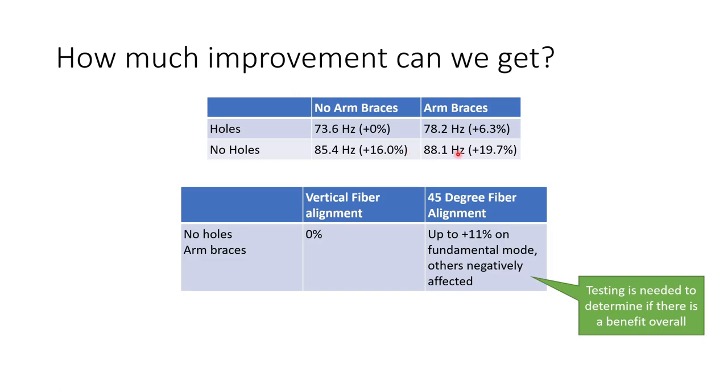And if we do both if we remove the holes and add the arm braces we can get a nearly 20 percent improvement in stiffness which should really make a huge difference when trying to tune the drone. But what if we look at the carbon fiber alignment? So this is looking at no holes with arm braces. So that's the best possible configuration. If we stick with the vertical carbon fiber alignment that gives us no improvement. But if we switch to a 45 degree fiber alignment we could be looking at up to 11 percent improvement in the torsional stiffness on that fundamental mode at the cost of negatively affecting the other modes. And so we will need to do testing here to determine if there is an overall benefit to changing the carbon fiber orientation. But it does look promising. It looks like we might be able to get even another 11 percent which would bring our total uplift to more than 30 percent.